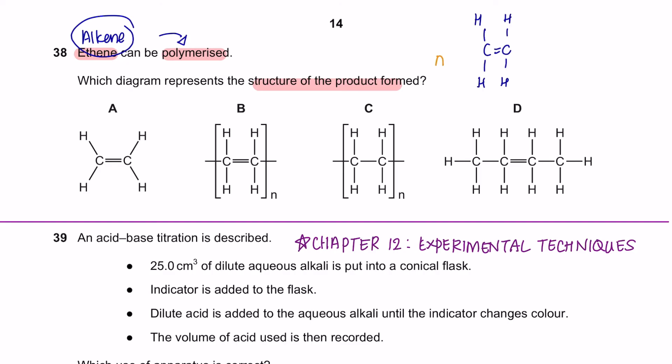So now you'll have single bonds on the outside. And depending on the number that you add, you're going to get a polyethene. So the answer is C.